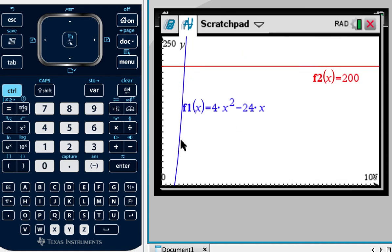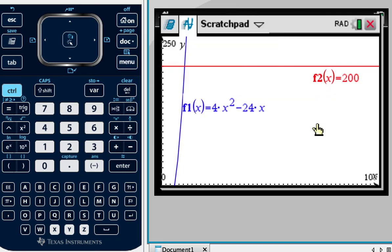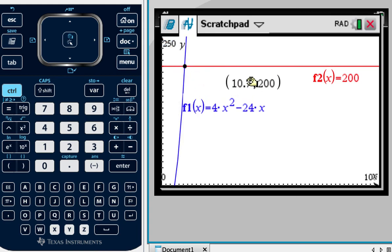Right, so here is our function, and here is the red line. So if we do menu, analyze graph, intersection, we can find that the solution is, so when we have 10.7 terms, we get the value 200.